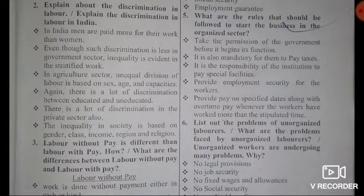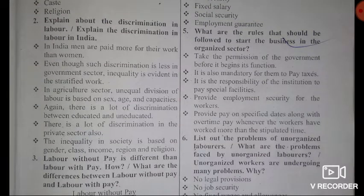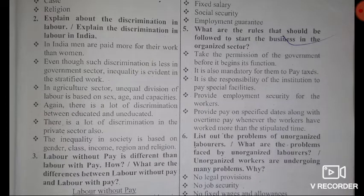There is a lot of discrimination between educated and uneducated people. There is also a lot of discrimination in the private sector. The inequality is based on gender, class, income, region, and religion. These are the forms of discrimination in labor in India.